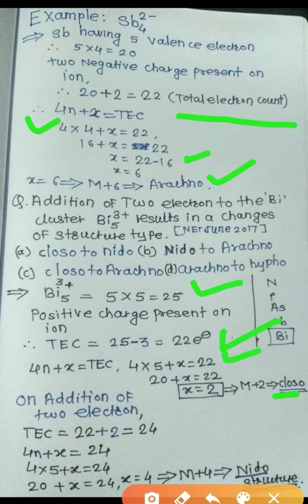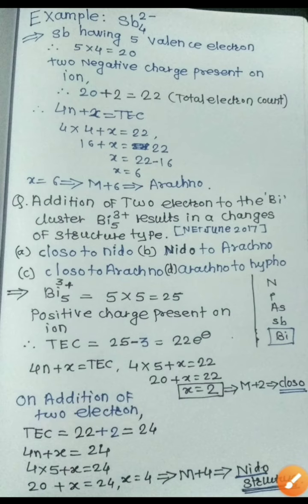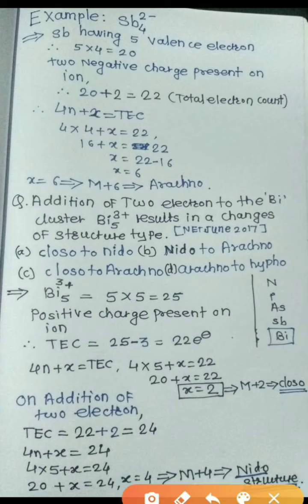We first determined that Bi₅³⁺ has the closo structure. On addition of two electrons, the new total electron count becomes 22 + 2 = 24. Applying the formula: 4 × 5 + x = 24, so 20 + x = 24, giving x = 4. Since x = 4, this corresponds to the nido structure. Therefore the structure changes from closo to nido, and the correct answer is option (a).